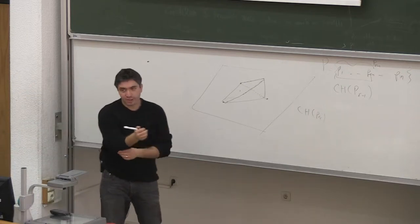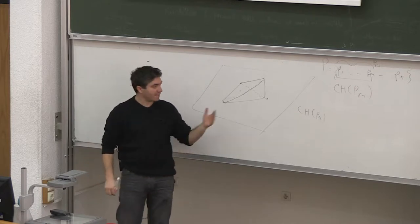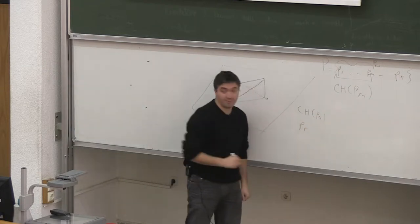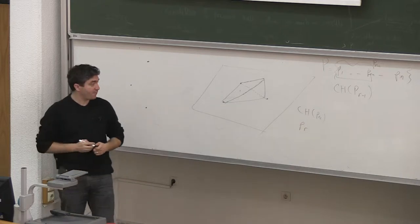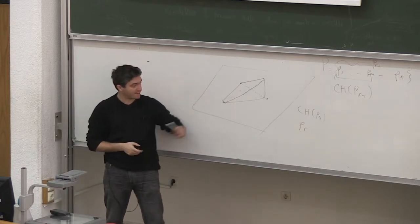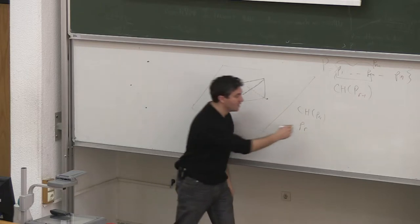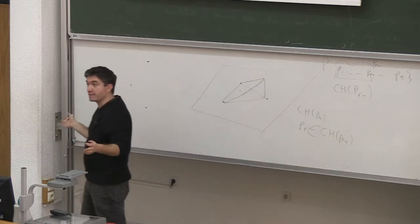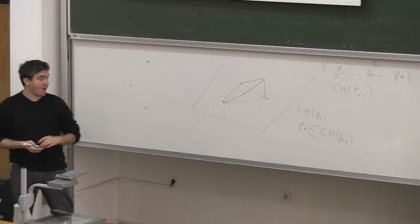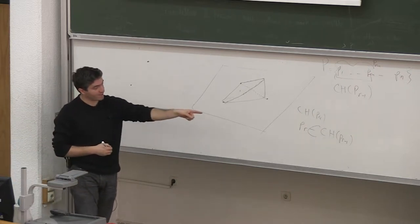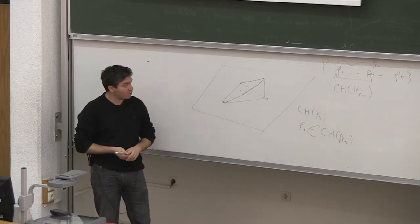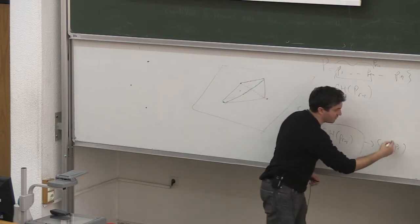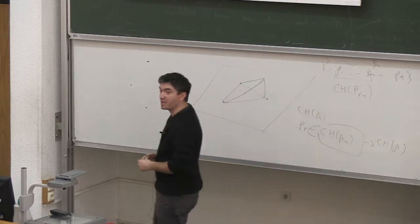The algorithm proceeds iteratively. In iteration r, starting from CH P4, we take point P_r and check whether this point is inside the convex hull CH P_{r-1} or not. If it is already contained in CH P_{r-1}, we do nothing — it's already inside the convex hull. But if it's outside, we need to update to CH P_r, which is the correct convex hull of the first r points.